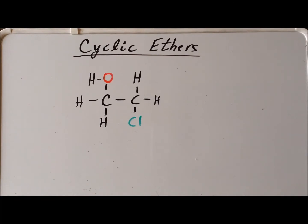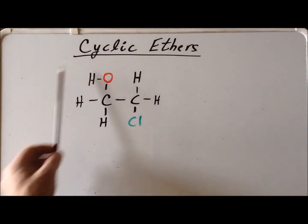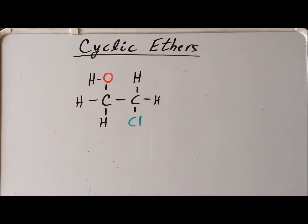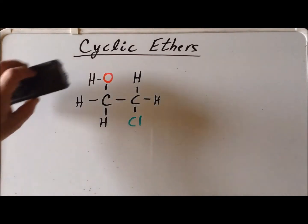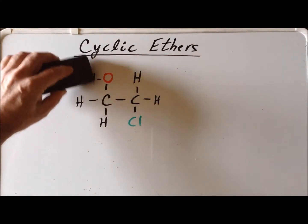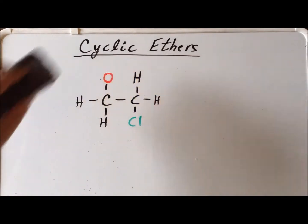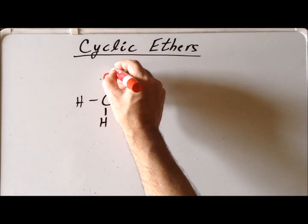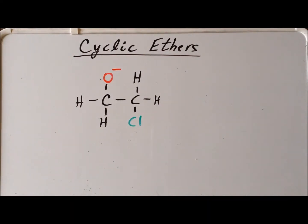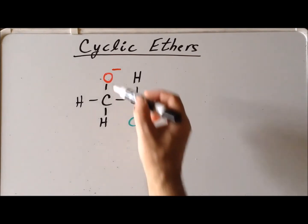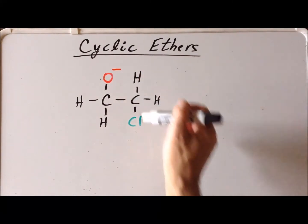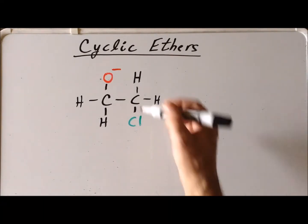Here we have 2-chloroethanol, and we see that this molecule has a hydroxy functionality, which will eventually become our nucleophile. And we also have a good leaving group, the halogen chlorine. The first step in the synthesis is to abstract the acidic hydrogen of the hydroxy group using a strong base, and this converts the hydroxide into an alkoxide. The next step is a nucleophilic attack of the alkoxide on the electron-deficient carbon that is holding the leaving group chloride.